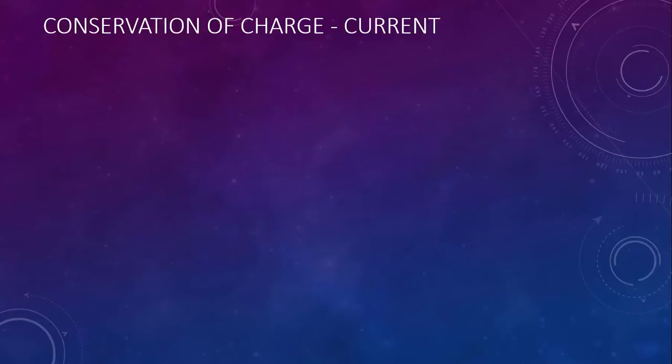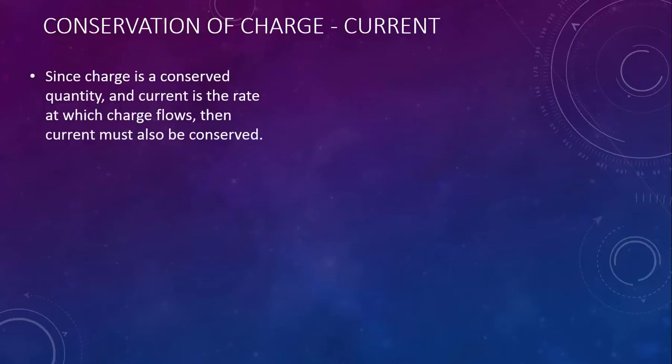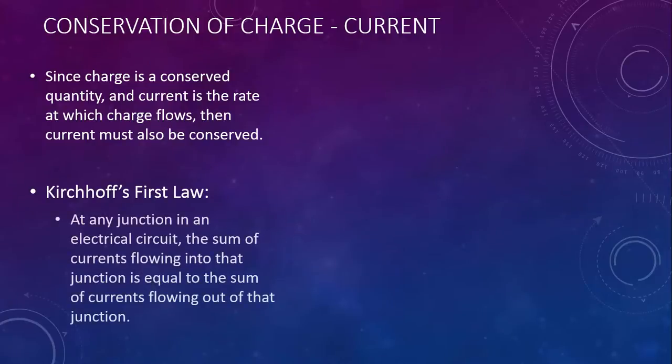Let's revisit conservation of charge and see how this applies to current. Since charge is a conserved quantity, and the current is the rate at which charge flows, then current must also be conserved. This is called Kirchhoff's first law. At any junction in an electrical circuit, the sum of currents flowing into that junction is equal to the sum of currents flowing out of that junction.